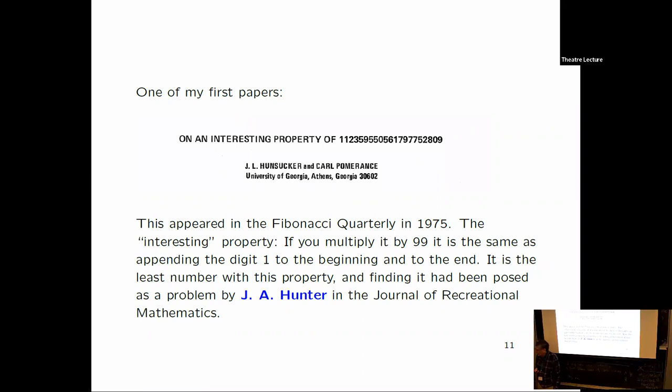I don't read the title. I'd only been at the University of Georgia a couple of years when I wrote this. So what is this interesting property of this huge number? Apparently if you multiply it by 99, I don't know why you would do that, but if you multiply it by 99, you get essentially the same number over again with a one in the front and a one in the back. And it's the smallest number with that property.